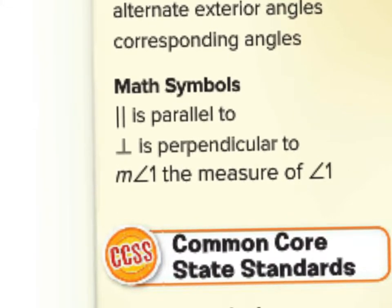We have the symbol for parallel lines, which we use to say a line is parallel to another. This symbol means perpendicular. And the notation M of angle one means the measure of angle one.